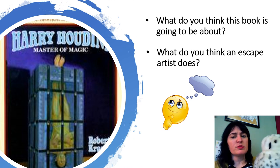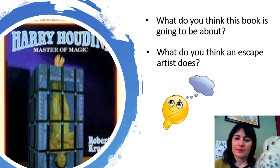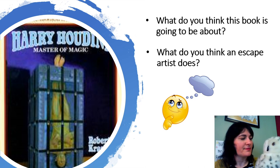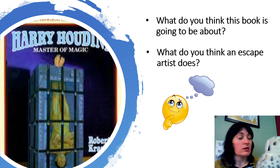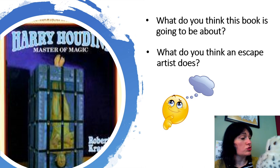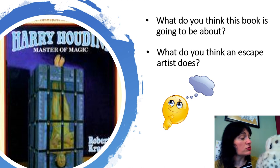Hey Hedwig, what do you think this book is going to be about? And what do you think an escape artist does? Take a minute to think about it and then let me know what you think. The book Harry Houdini: Master of Magic is a biography — a book that tells about a person's life, and it's nonfiction, so it's true. Houdini became world famous in the late 1800s and the early 1900s, over 100 years ago, for escaping from situations that seemed impossible to escape from.